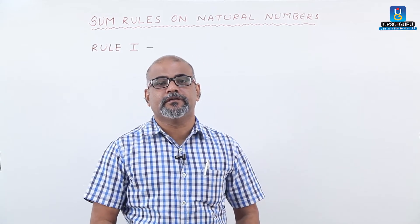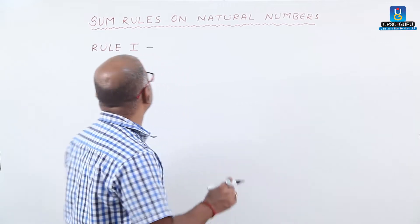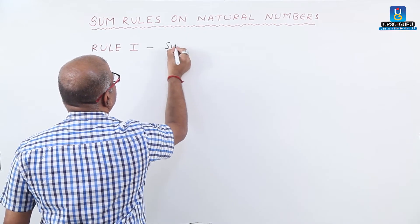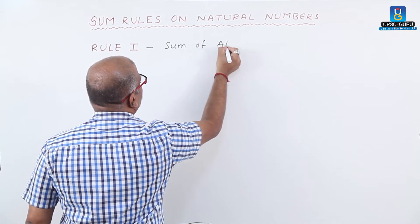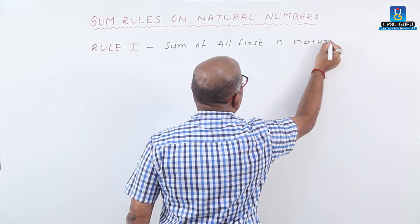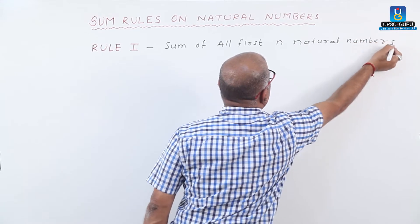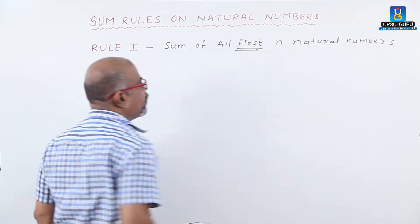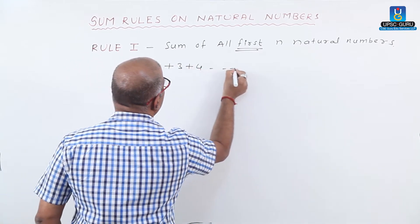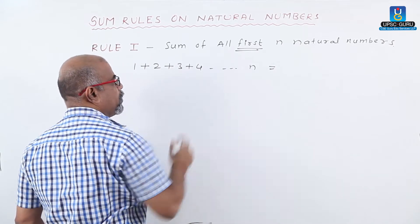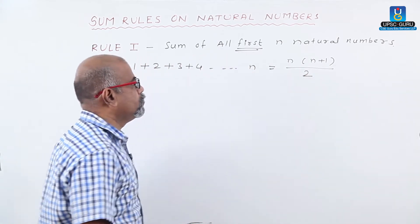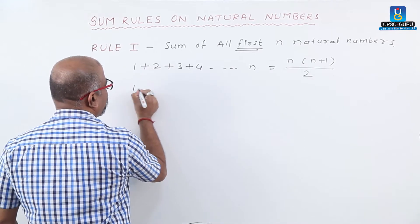Our next topic is some rules on the natural numbers — specifically, rules on sums. The first rule is the sum of the first n natural numbers, meaning numbers starting from 1: that is, 1 plus 2 plus 3 plus 4 up to n. The formula is n into n plus 1 divided by 2.